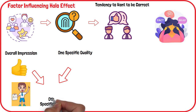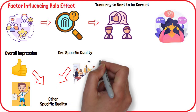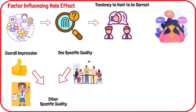Physical appearance is often a major part of the halo effect. However, it can also encompass other traits as well. For example, people who are sociable may also be seen as more likable.